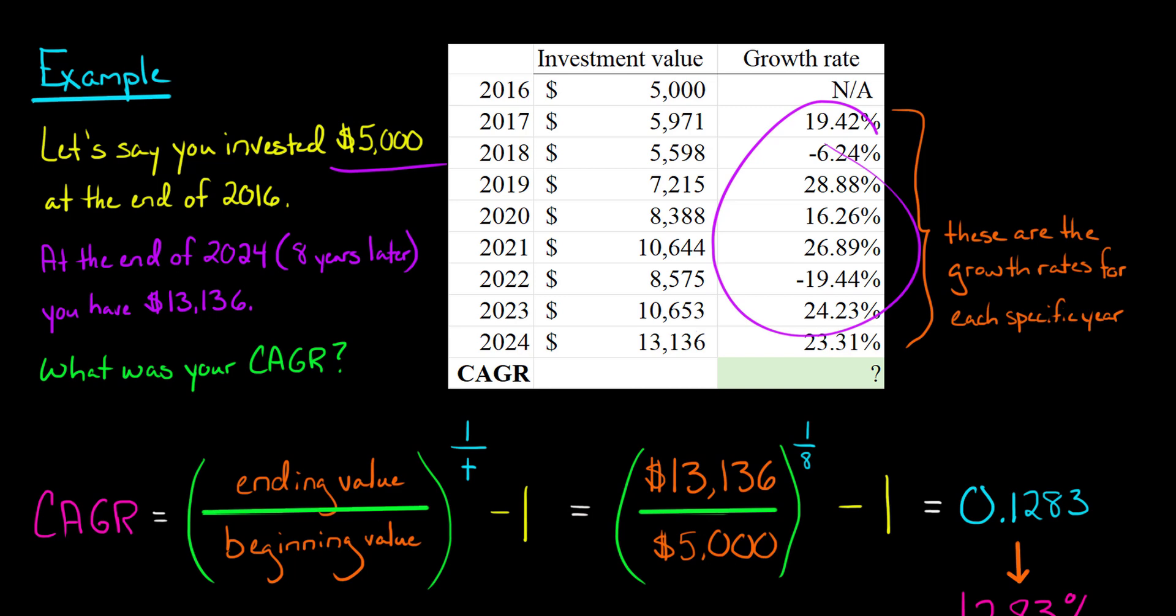So again, we take our ending value divided by the beginning value. So the ending value at the end of 2024, we have $13,136. So that's going to go in our numerator. Then at the very beginning, we had $5,000. So that's going to go in the denominator. And then we're going to raise to the one divided by t power. So there were eight years. So eight is the number of periods. So one divided by eight, or the 0.125 power.